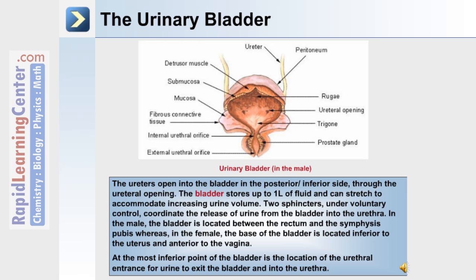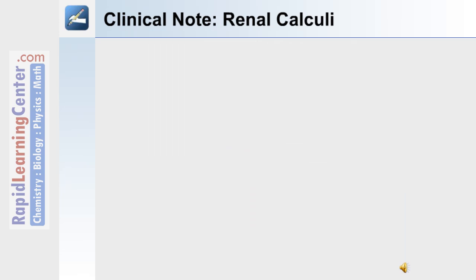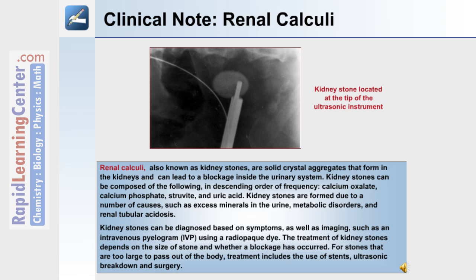At the most inferior point of the bladder is the urethral entrance for urine to exit into the urethra. Kidney stones, or renal calculi, are solid crystal aggregates that form in the kidneys and can cause blockages in the urinary system. They can be composed of calcium oxalate, calcium phosphate, struvite, or uric acid, and form due to excess minerals in the urine, metabolic disorders, or renal tubular acidosis. Kidney stones can be diagnosed based on symptoms and imaging such as an intravenous pyelogram (IVP) using a radiopaque dye. Treatment depends on size and location and may include stents, ultrasonic breakdown, or surgery.